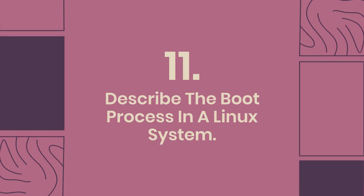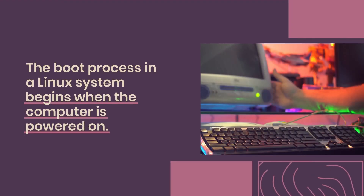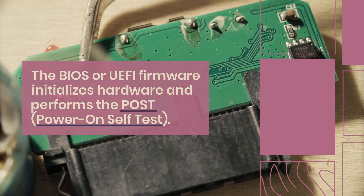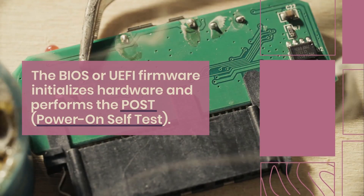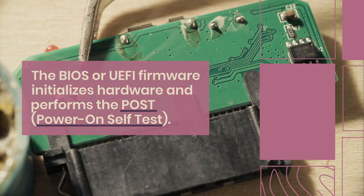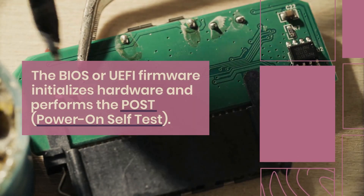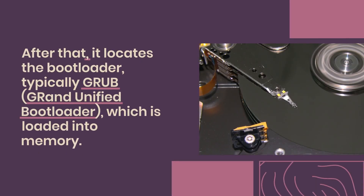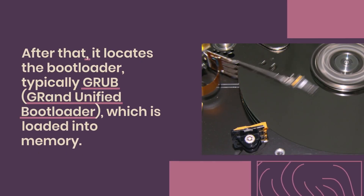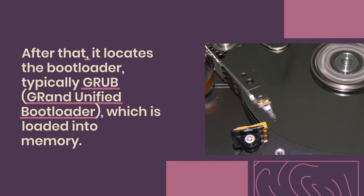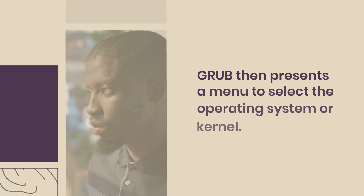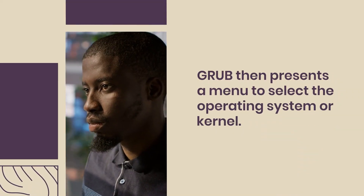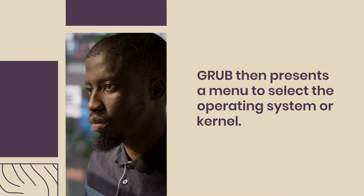Question 11: Describe the boot process in a Linux system. The boot process in a Linux system begins when the computer is powered on. The BIOS or UEFI firmware initializes hardware and performs the POST, power on self-test. After that, it locates the bootloader, typically GRUB, Grand Unified Bootloader, which is loaded into memory. GRUB then presents a menu to select the operating system or kernel.